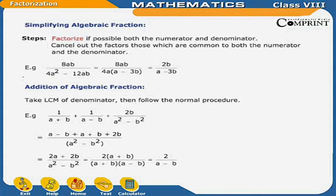1 upon a plus b, plus 1 upon a minus b, plus 2b upon a square minus b square is equal to a minus b plus a plus b plus 2b upon a square minus b square, is equal to 2a plus 2b upon a square minus b square, is equal to twice of a plus b upon a plus b into a minus b, is equal to 2 upon a minus b.